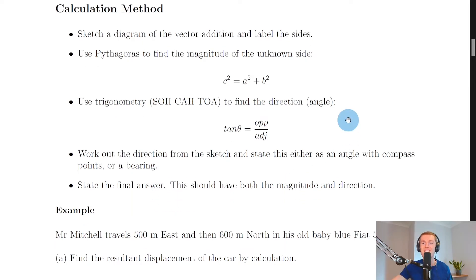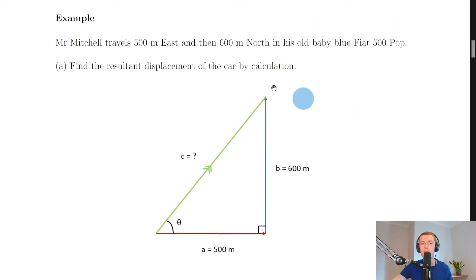So that we can see we get roughly the same answers using the calculation method. So here's our example: Mr. Mitchell travels 500 meters east and then 600 meters north in his old baby blue Fiat 500 Pop. So the same example we had before.